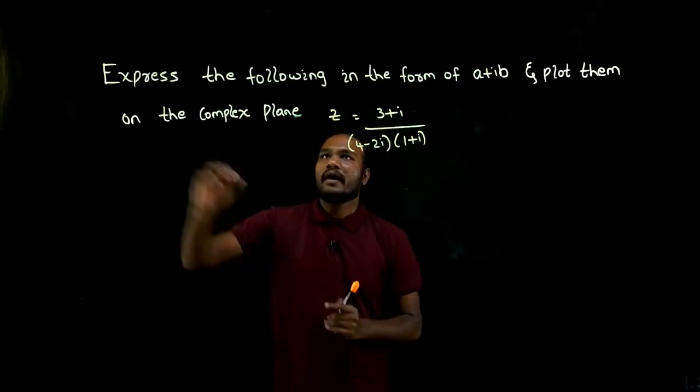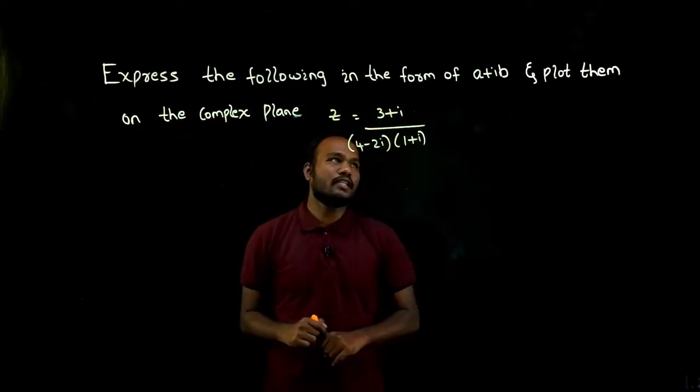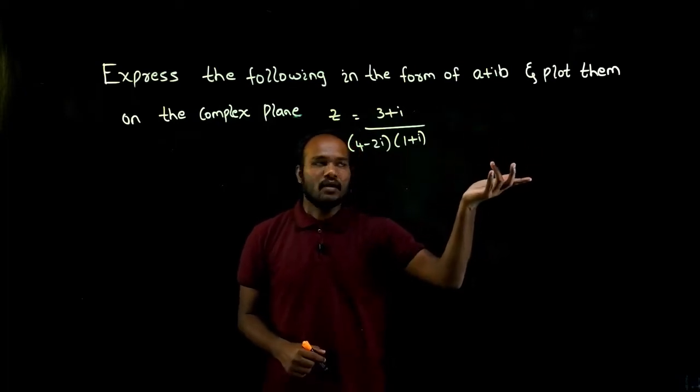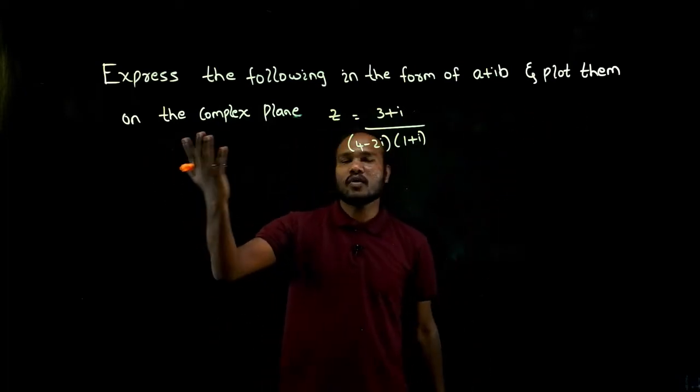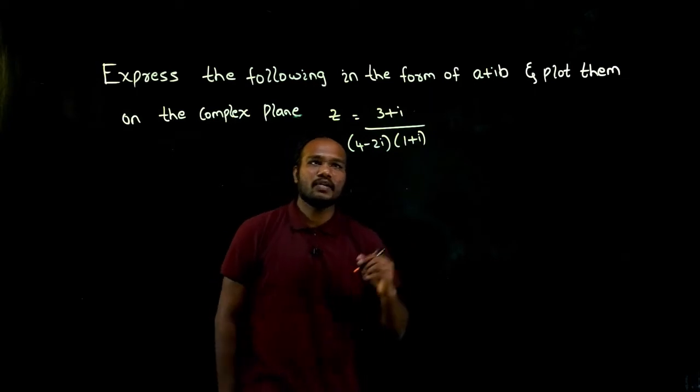What is given in the question? Express the following in the form of a plus ib, and also we have to plot them on the complex plane. Let's take what is given.